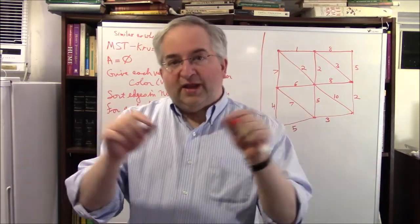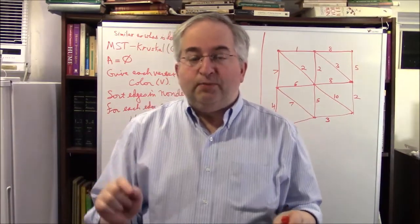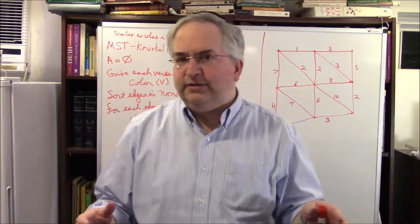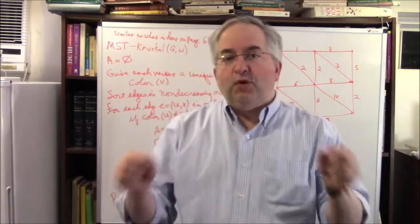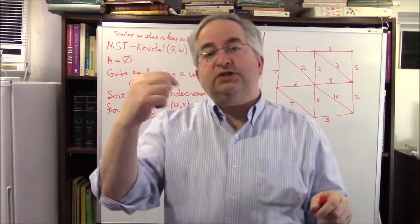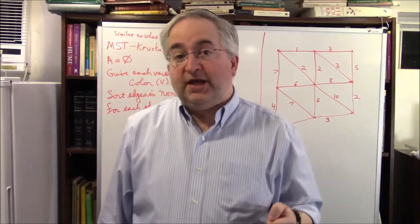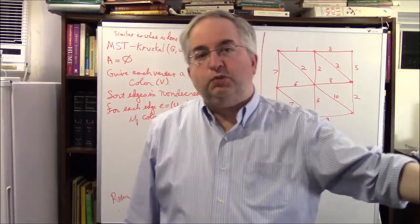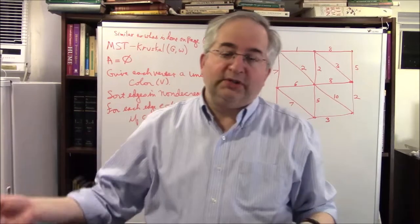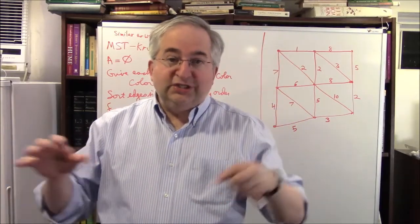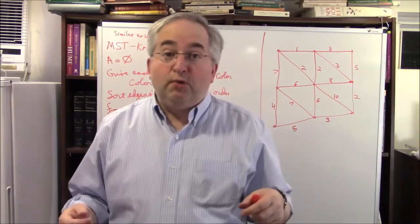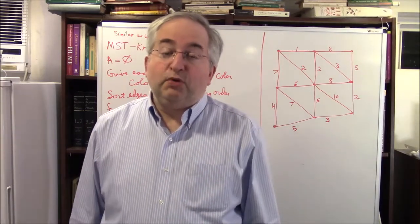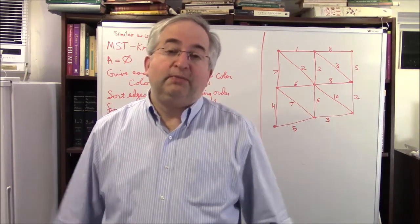Basically, for every element in your set, you have them pointing to one representative. All Montanans point to the representative of Montana — you might call that the Governor. All people from New Jersey point to their governor, all from New York to their governor. Then given two people, you want to see if they belong to the same group — you check if they're both pointing to the same governor. If they are, they're in the same group; if not, they point to different groups.